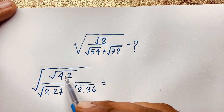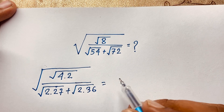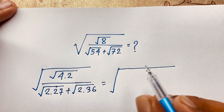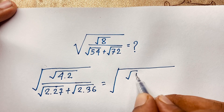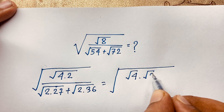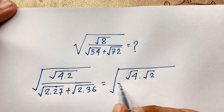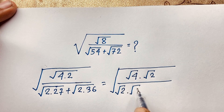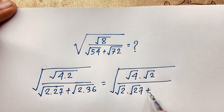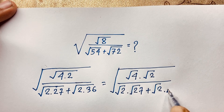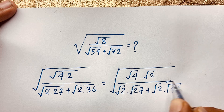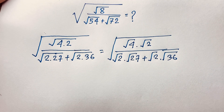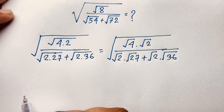You know that square root of ab equals square root a times square root b. According to this law, we get: square root 4 times square root 2, over square root 2 times square root 27, plus square root 2 times square root 36.